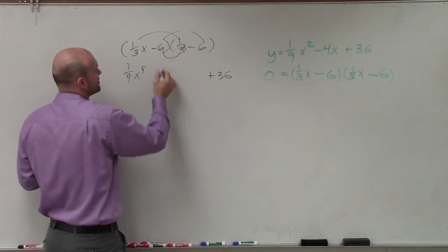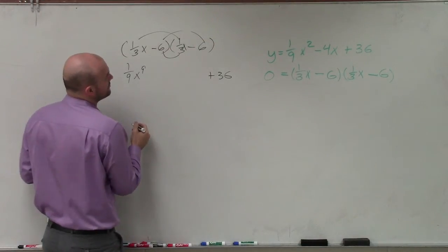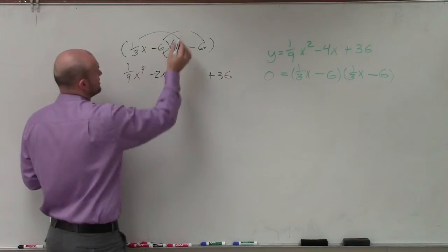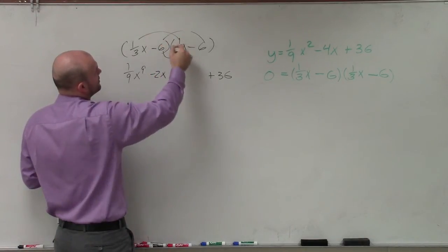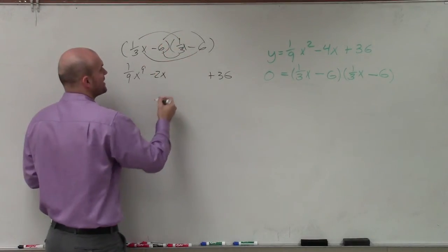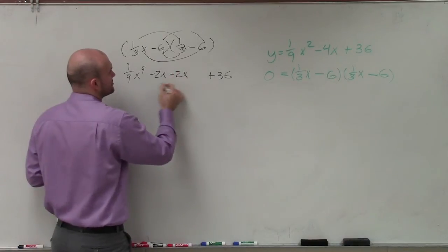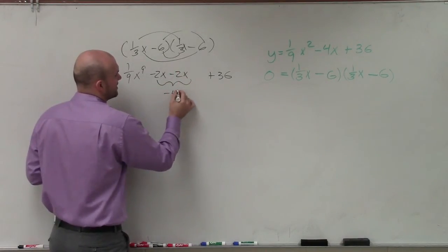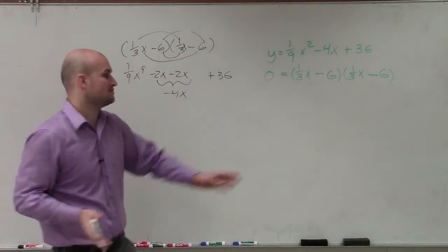Now, let's check our middle term. (1/3)x times negative 6 is going to be negative 2x, and negative 6 times (1/3)x is negative 2x. That gives us negative 4x. Therefore, this is a perfect square trinomial.